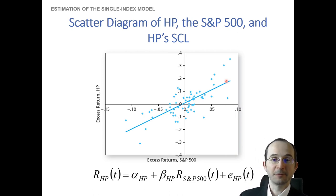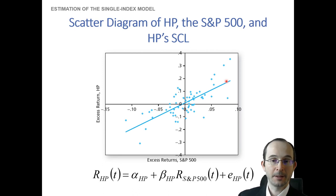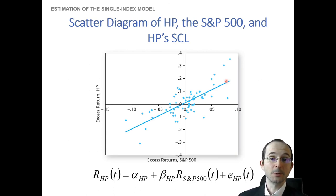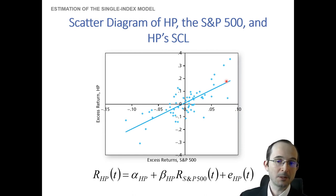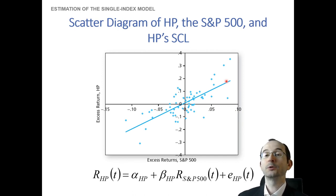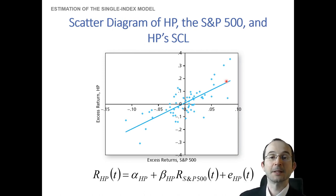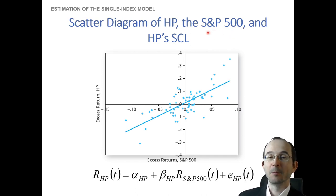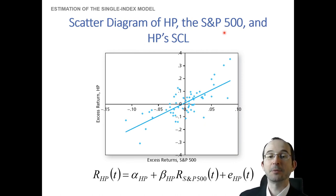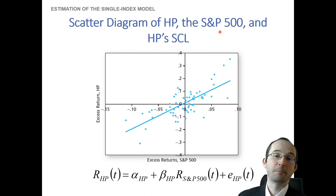With that assumption in place, if we feel comfortable using the S&P 500 as our market proxy, we can actually go about estimating the beta of HP. And remember, if you don't feel comfortable making that assumption, you can always use other portfolios — a larger portfolio of US equities like the Russell 3000, a world portfolio, or another country-specific portfolio if you are dealing with a risky asset in another country. So we shouldn't be wedded to the idea that we must use the S&P 500 as our market portfolio proxy. But for HP specifically, the evidence seems encouraging that we can get away with using the S&P 500 as the market portfolio proxy in this case.